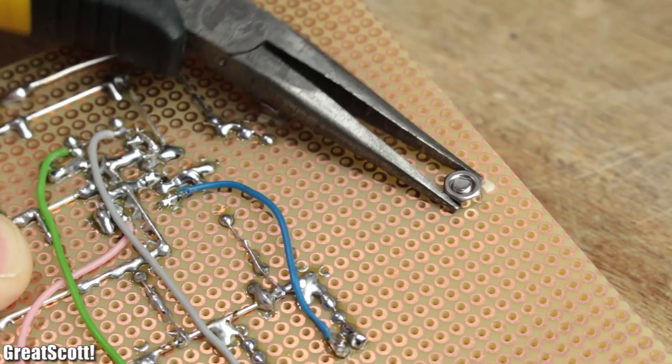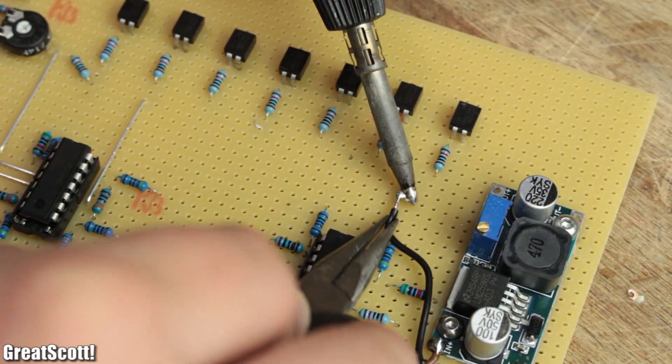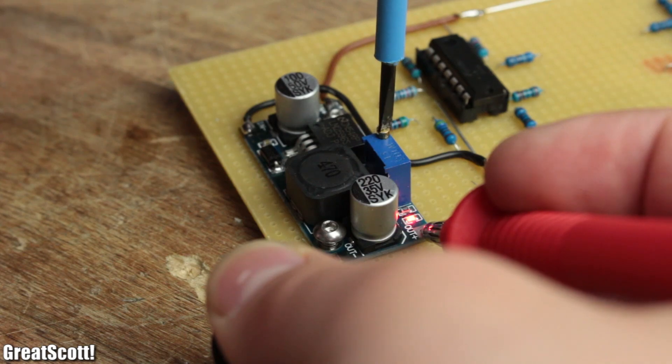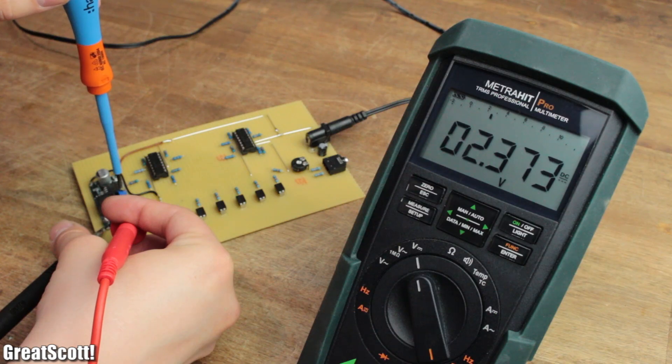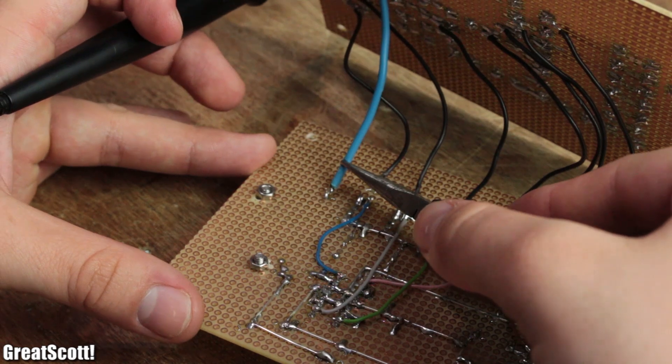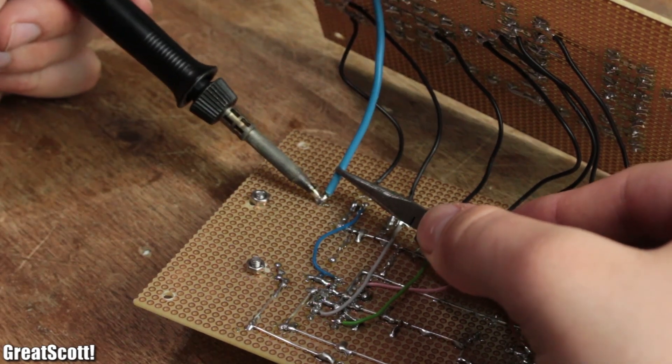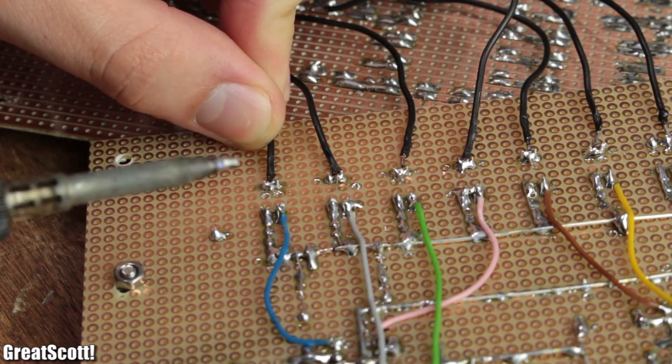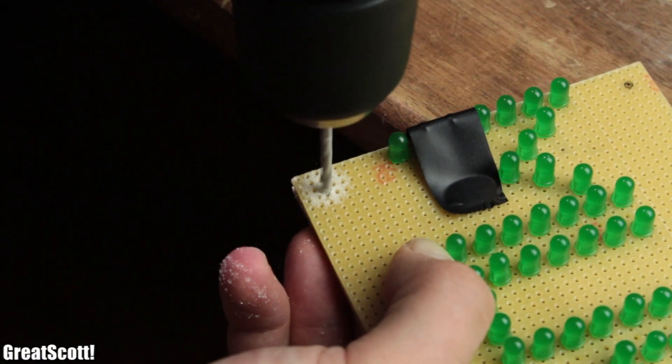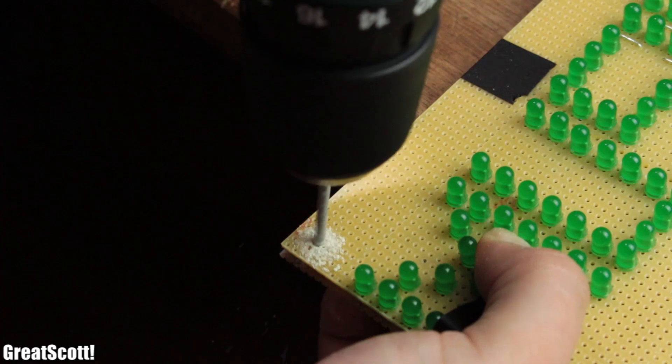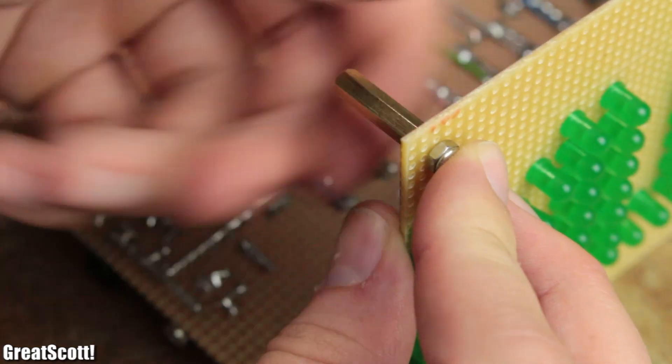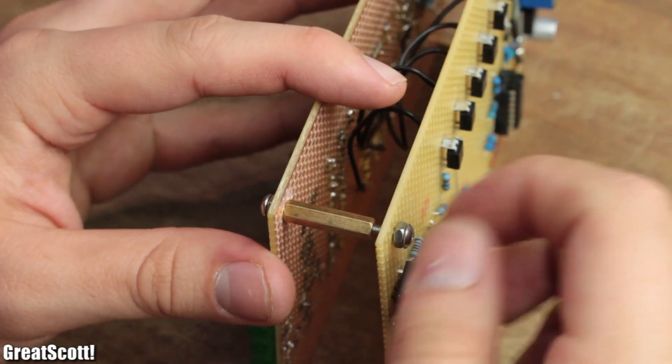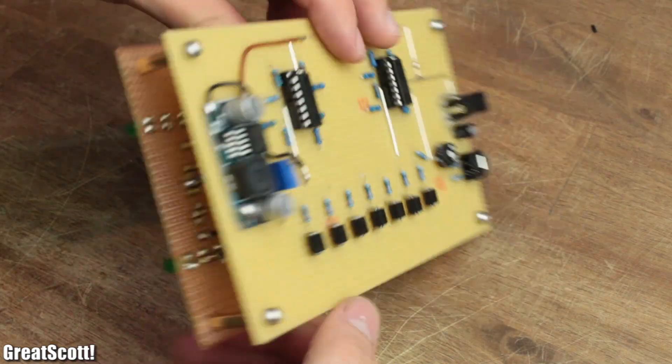Afterwards, I mounted a buck converter to the board, hooked it up to the 12 volt power line, set its output voltage slightly higher than the forward voltage of my LEDs, connected the positive output to the common anode and the cathode lines to the drain of the corresponding MOSFETs. Then I drilled 3mm holes in each corner of the two boards, used 20mm spacers and M3 bolts to join them together, and the project was complete!